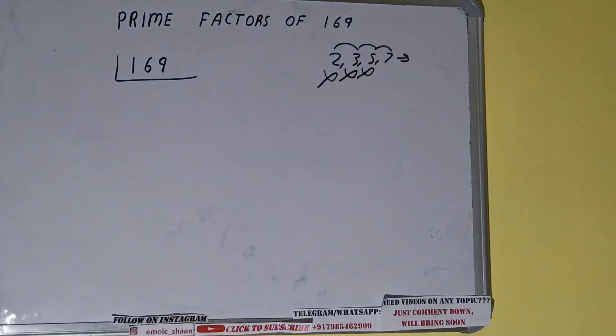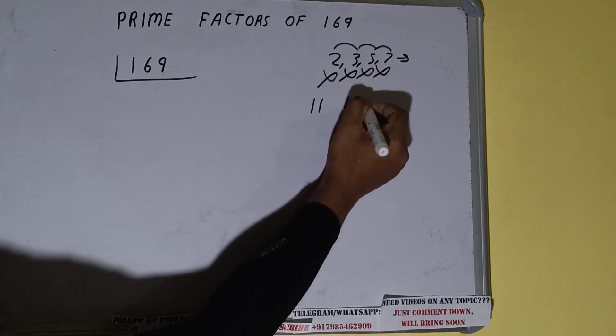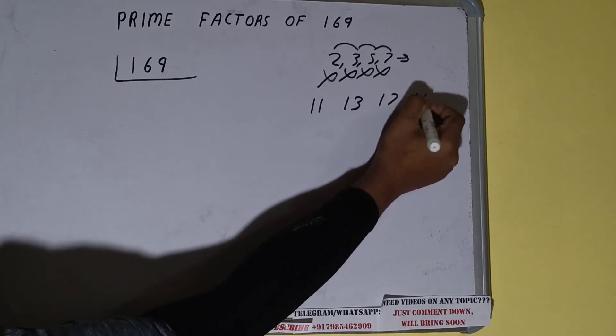So we'll be going to the next lowest prime number, that is 7. Not divisible by 7 also. So we'll be checking with the next lowest prime numbers: 11, then 13, then 17, and then 19.